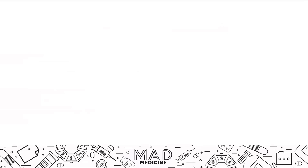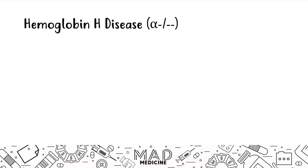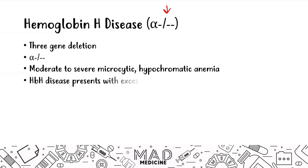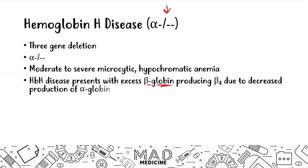The next gene deletion involves three genes and is called hemoglobin H disease. With three alpha globin chain gene deletions, this presents with moderate to severe microcytic hypochromic anemia. These patients may be hypoxic because they are not producing a sufficient amount of hemoglobin. Hemoglobin H disease presents with excess beta globin production producing B4, because there is such a decreased alpha globin chain production — it is low because three genes have been deleted, resulting in very low alpha globin chains.